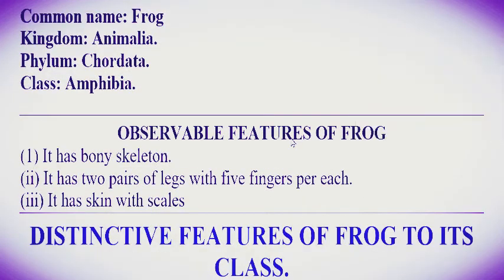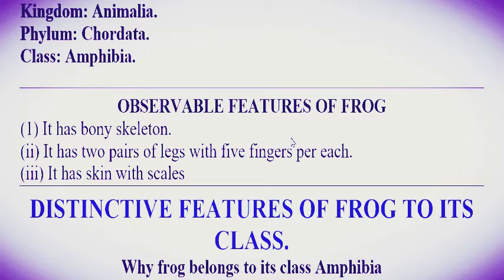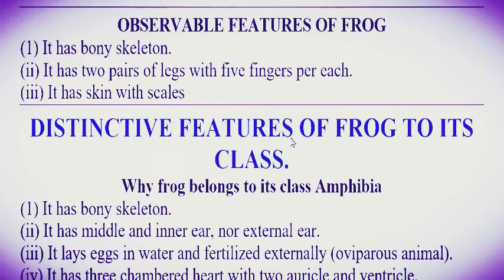Observable features of the frog — we consider only external features. Number one: it has a bony skeleton. Number two: it has two pairs of legs with five fingers per each leg. Number three: it has skin with scars — its skin is not smooth like fish; it has scars. Those are the observable features of the frog.